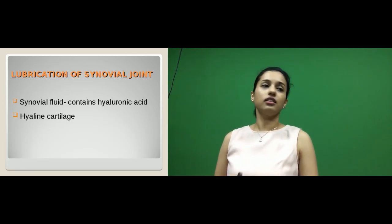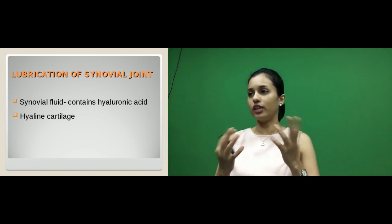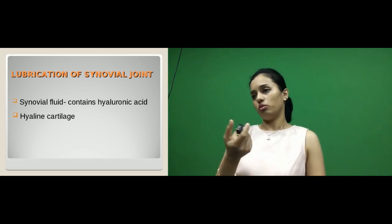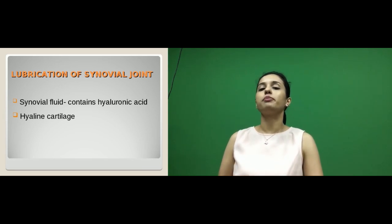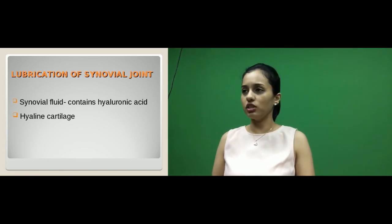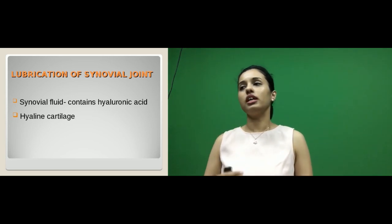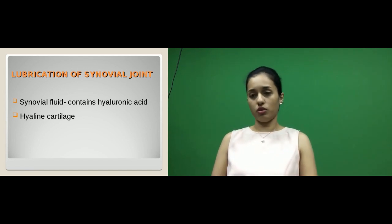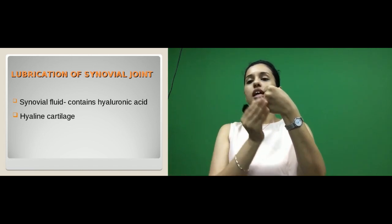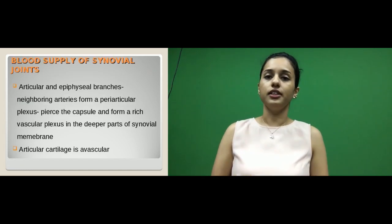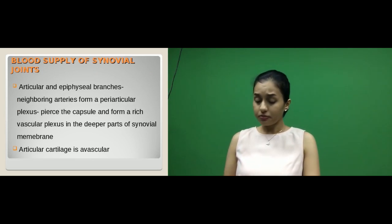That covers the synovial joints and their classification. Synovial joints can permit free movement primarily because of the lubrication provided by synovial fluid, which contains hyaluronic acid. Just as an automobile needs good lubrication to move smoothly, joints use synovial fluid. Additionally, the bony margins are covered by articular cartilage — hyaline type — which forms a cushion or slippery surface, also helping in free movements.